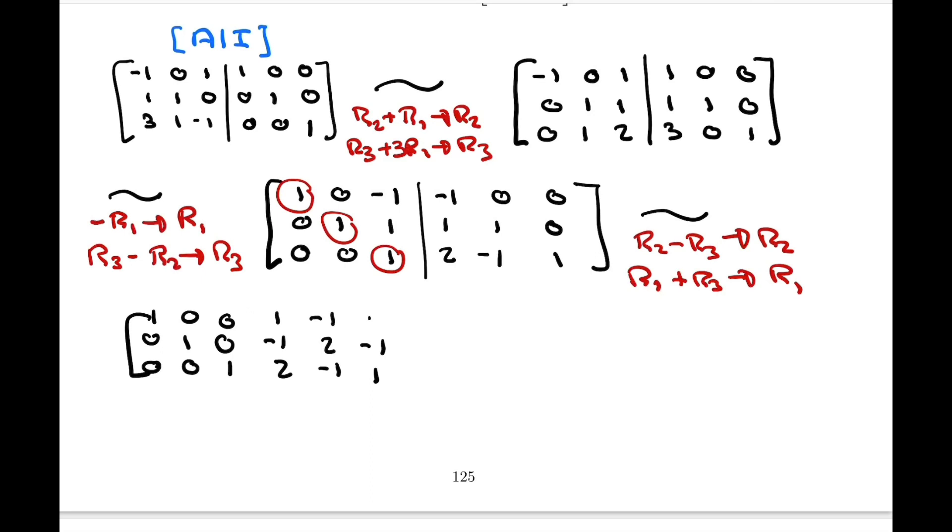We're adding this time, so 1, negative 1, and 1. And this is our final matrix.